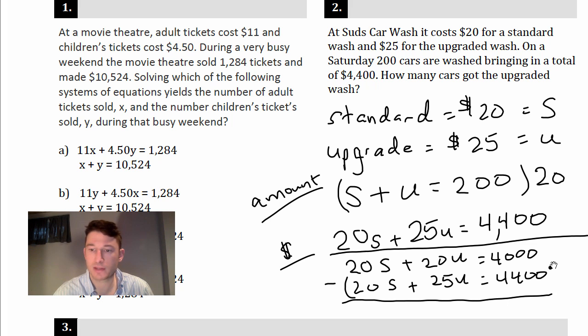And to solve this I'm going to subtract the top one from the bottom one. So 20 minus 20 cancels out, 20 minus 25 is negative 5U, 4,000 minus 4,400 is negative 400.